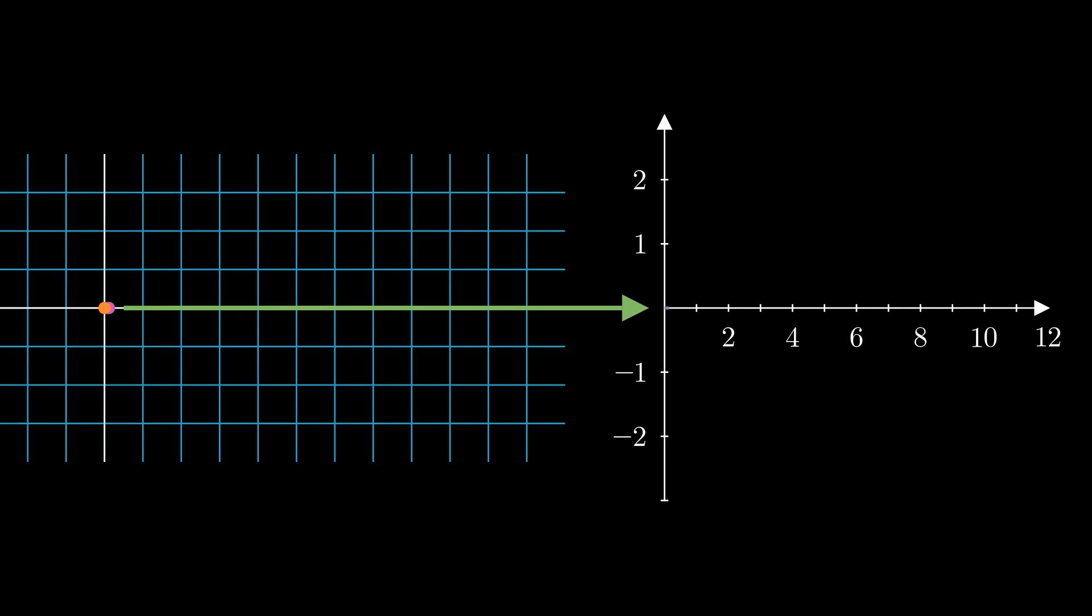As we move the input dot to the right we can see the output stays at zero for the most part. Except when the input dot is at 5 and also another spike when the input dot is at 10.